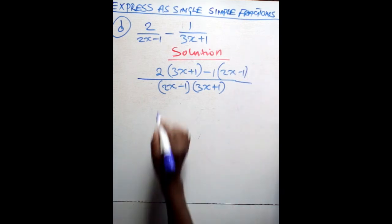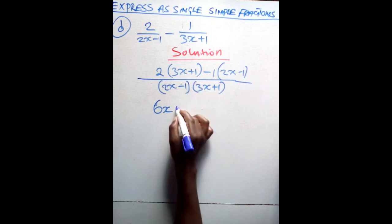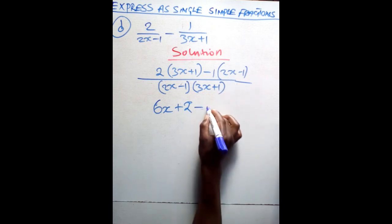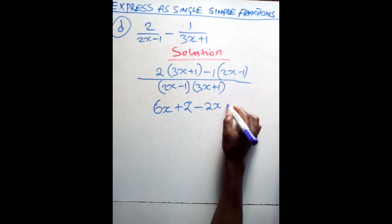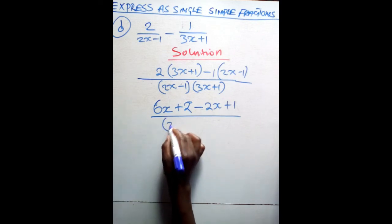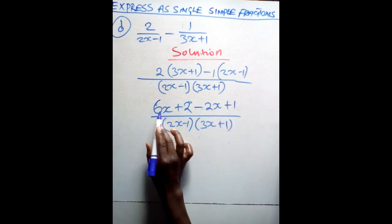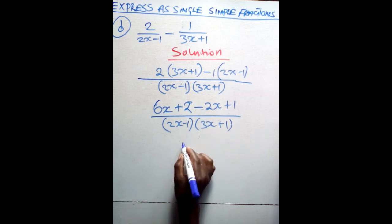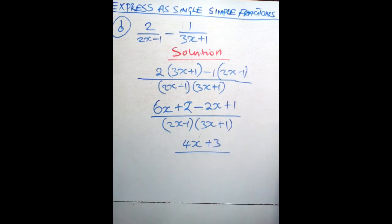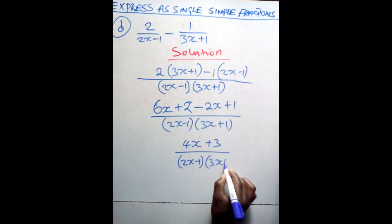Open the brackets in the numerator. 2 times 3x gives you 6x. 2 times 1 gives you 2. Negative 1 times 2x gives you negative 2x. Negative 1 times negative 1 gives you positive 1. Over — you still maintain the denominator (2x minus 1)(3x plus 1). Then from there, 6x minus 2x gives you 4x. 2 plus 1 gives you 3. So you have (4x plus 3) over (2x minus 1)(3x plus 1).